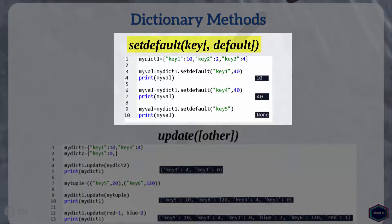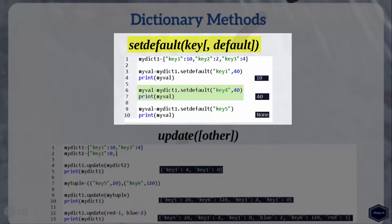The setdefault method takes a key as an argument and returns its value only if the key is present in the dictionary. If there is no such key, setdefault inserts the key with its value equal to the default argument and also returns the default value. If the default argument is not given, the value is always None. In this example, I call setdefault with key argument set to key1 and default argument equal to 40 — because key1 already exists, it returns the value associated with key1. In the next example, I call setdefault with key argument set to key4 — because there is no key4, setdefault adds key4 with value 40 and returns 40. Similarly, setdefault adds key5 with no second argument, so the value of key5 is None and setdefault also returns None.